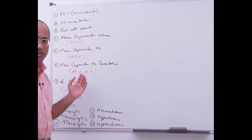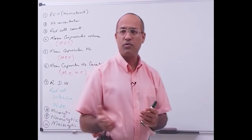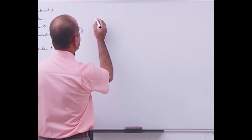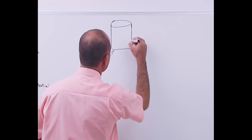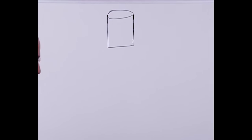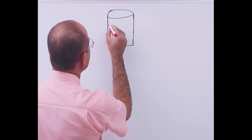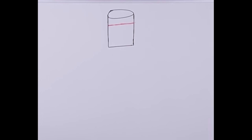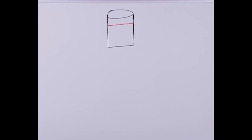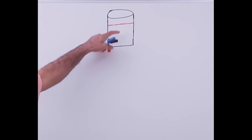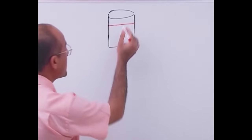Let's start discussing. Suppose we take blood from a person's vein and put it into a tube — a container. We anticoagulate the blood so that it does not coagulate, and then centrifuge it. When blood is anticoagulated and centrifuged, naturally the cells will come down and the plasma will remain on top.